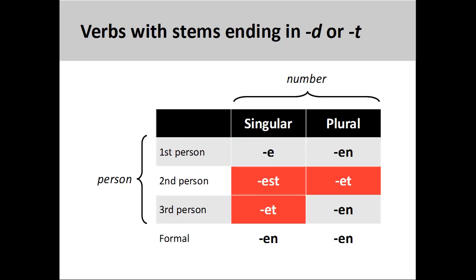Some regular verbs have a stem that ends in '-d' or '-t'. When this is the case, we change the conjugation pattern slightly by adding an '-e' before the second and third-person singular, as well as second-person plural verb endings. These exceptional endings are marked in red on the screen.